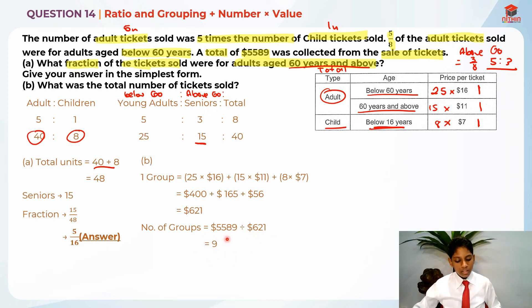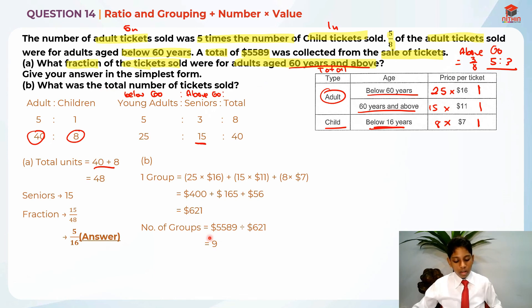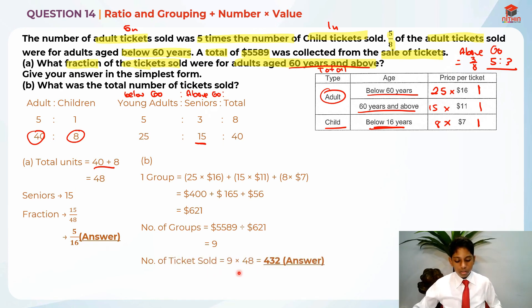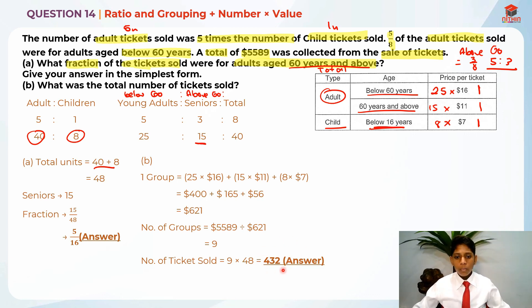There are 9 groups of these people. To find the total number of tickets sold, I take 9 groups times 48 units per group, which gives an answer of 432. I hope you understood my explanation for this question. Thank you and bye-bye, I'll see you in my next video.